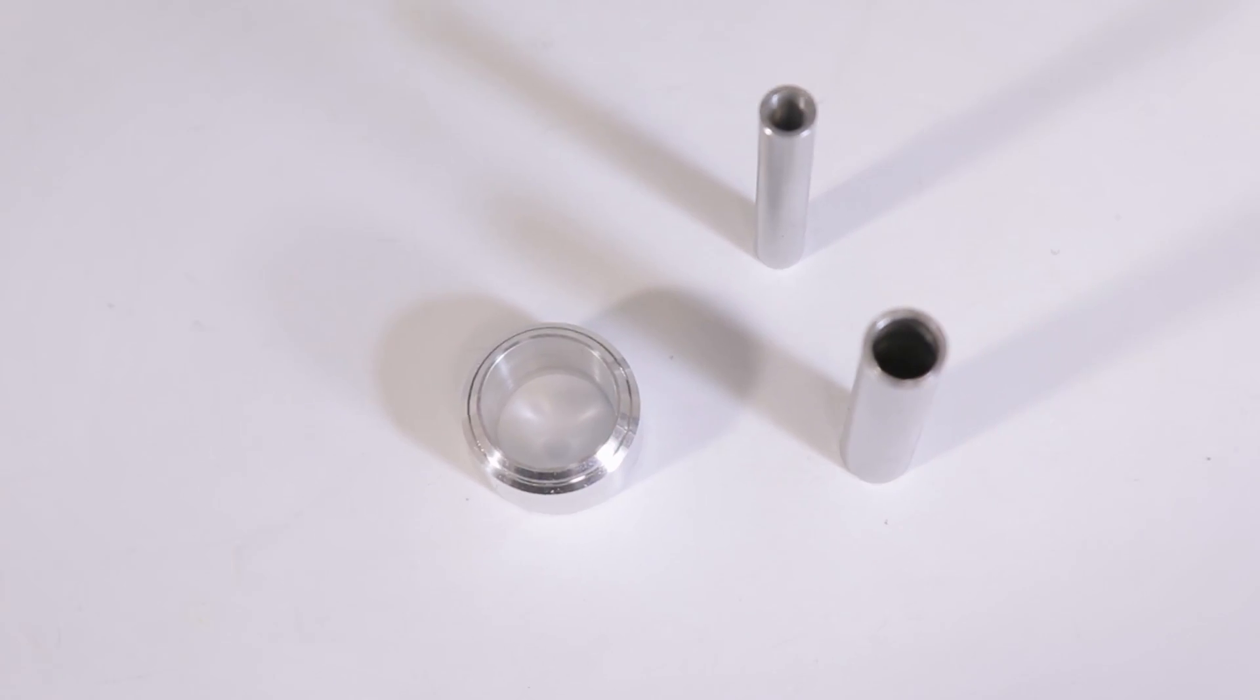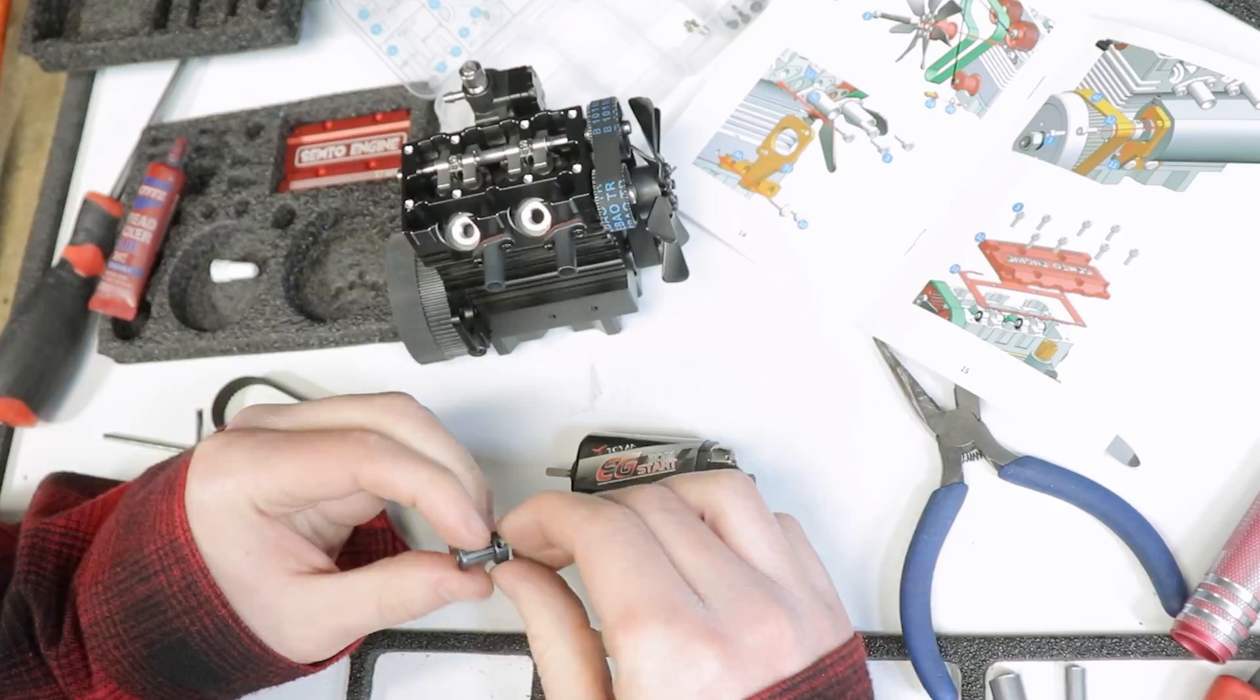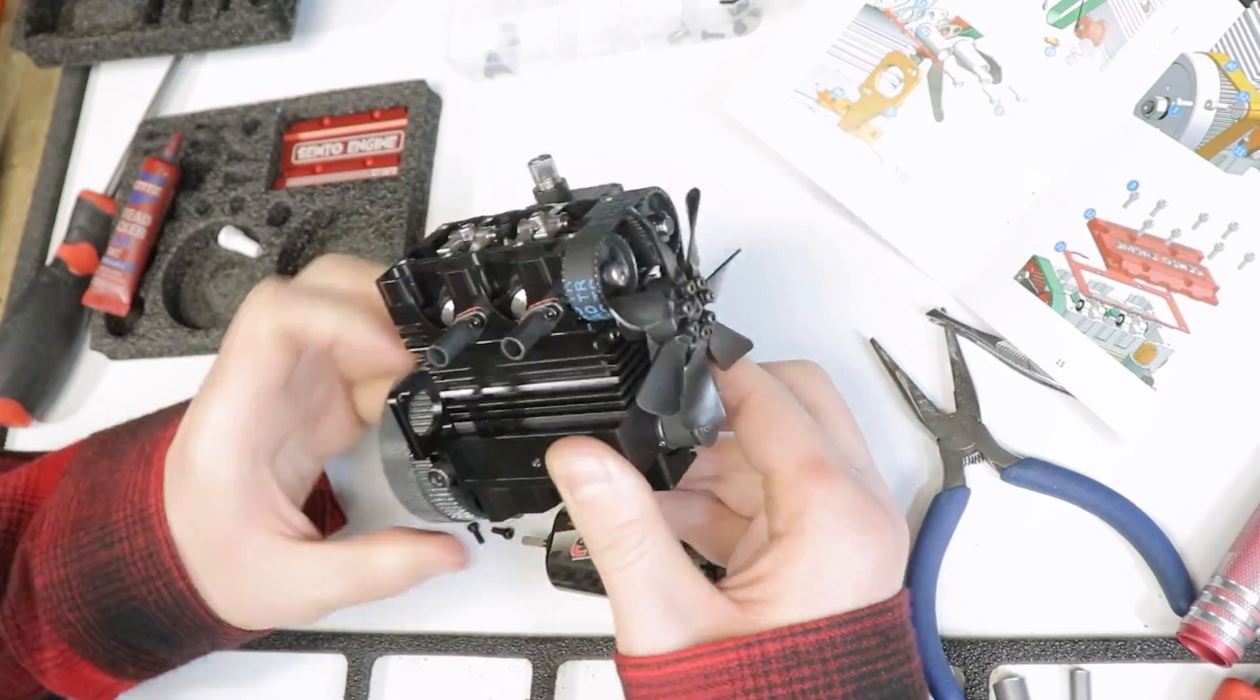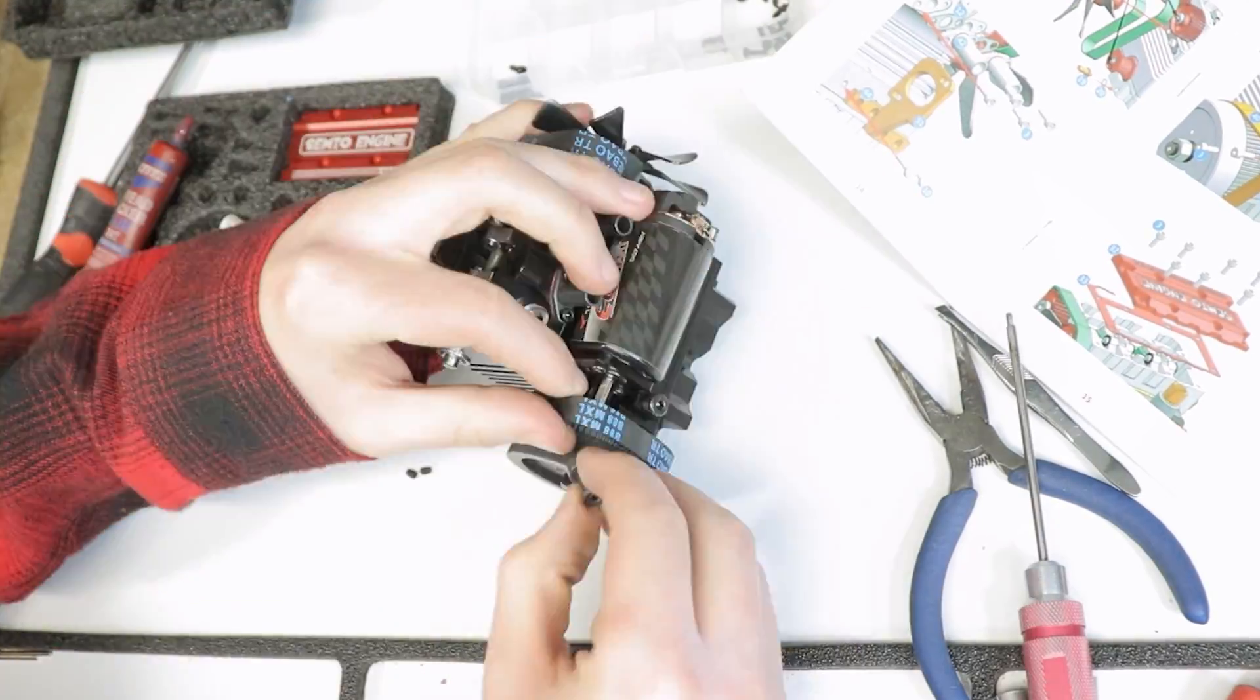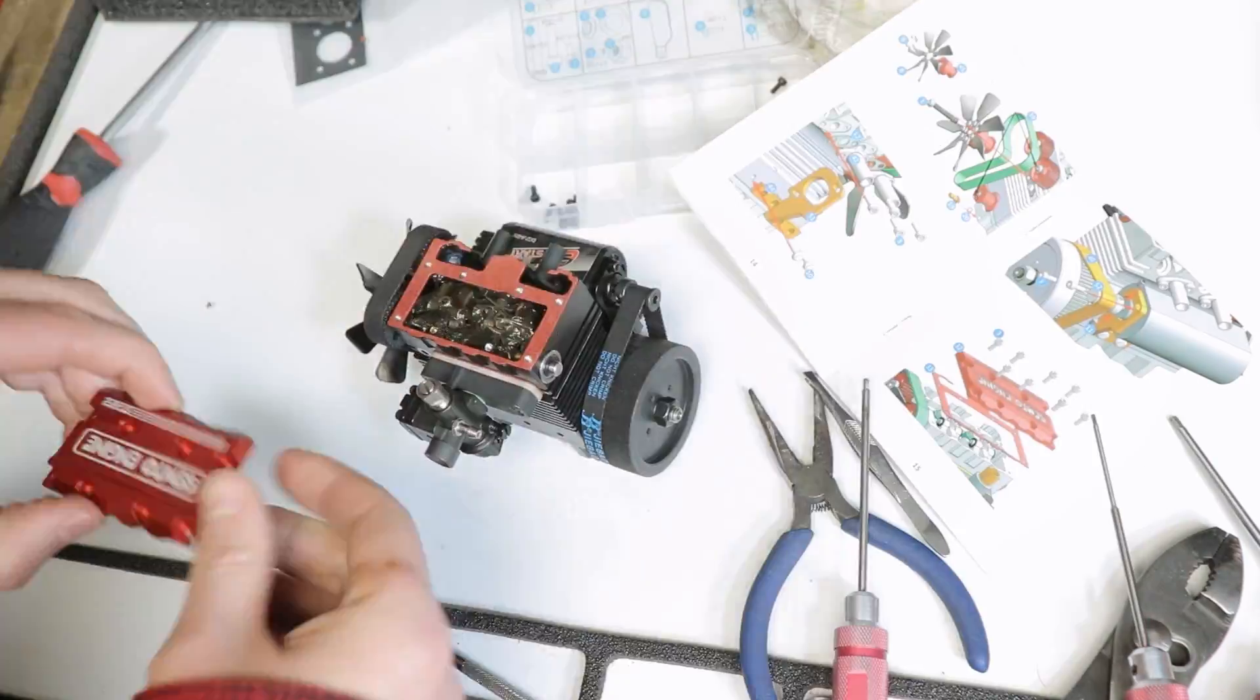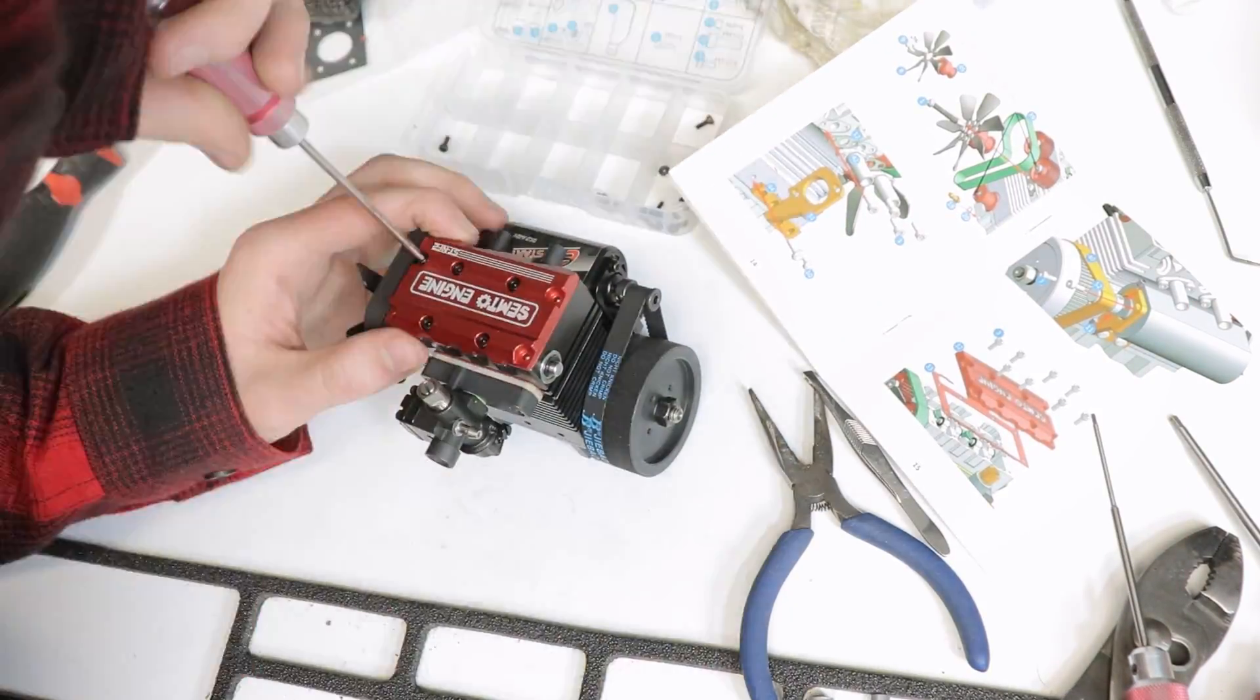A piston ring compressor and a couple different size drivers are included to assist with installing the small bearings and piston rings. Some of the components were already assembled like the pistons and the carburetor which made the assembly process even easier. I was able to finish the assembly in one evening.